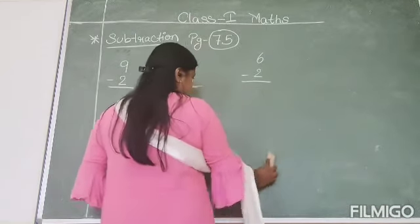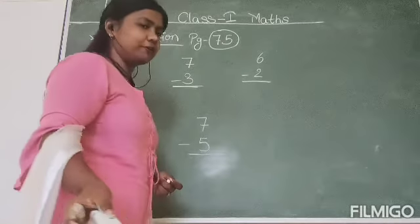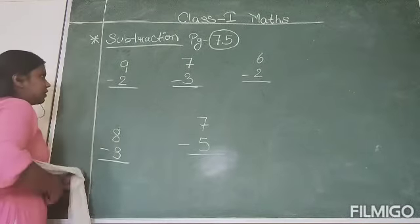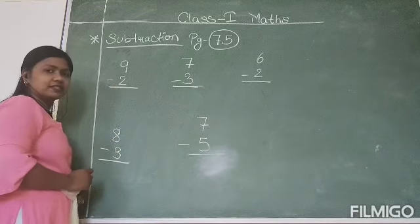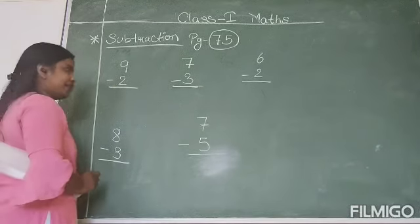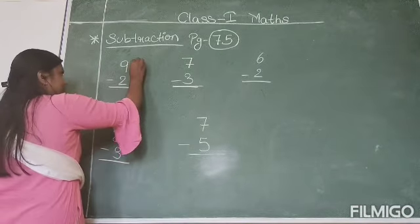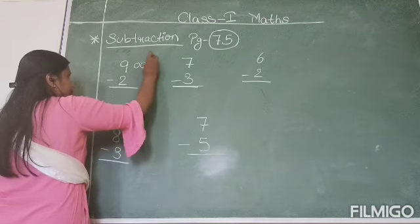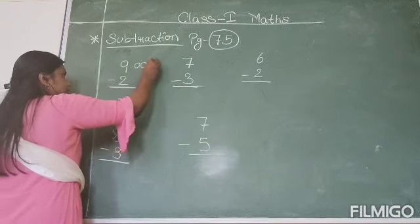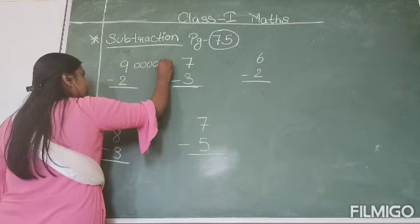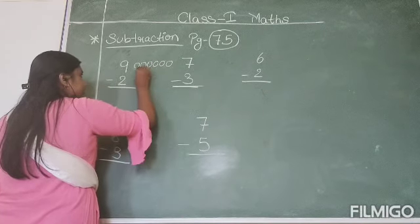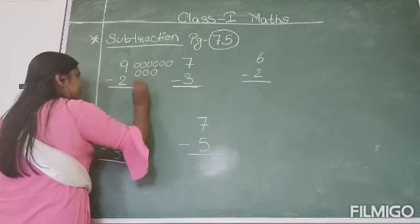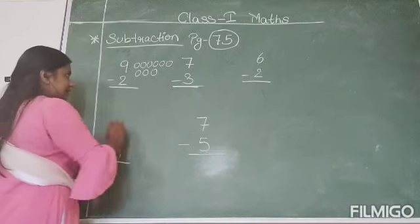But in subtraction, we already find that it is different. So let's learn how to subtract. The first number is 9. The rule will be the same — we will draw 9 circles. So here 9 circles are drawn. So the first number is 9 and we will draw 9 circles.